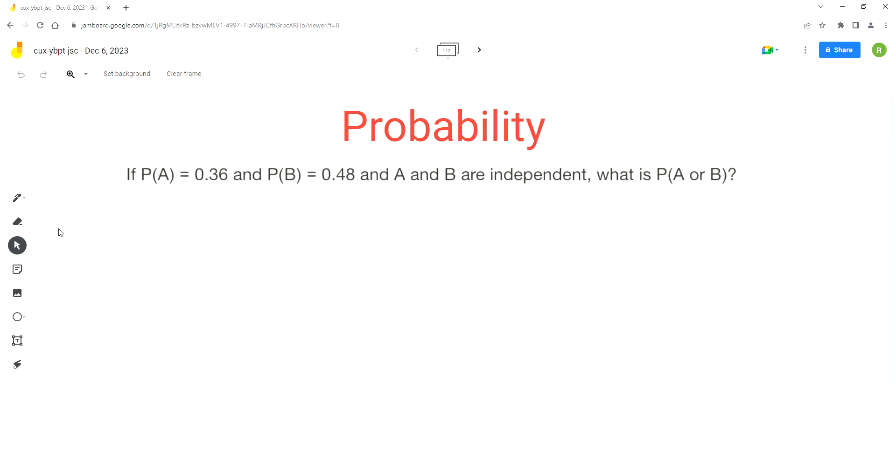Hello everyone. So in today's problem, we'll use the concepts of probability to find the value of P(A or B). So let's analyze the given problem. We are given the probability of event A, which is 0.36. We are given the probability of event B, which is 0.48. And events A and B are given as independent events.